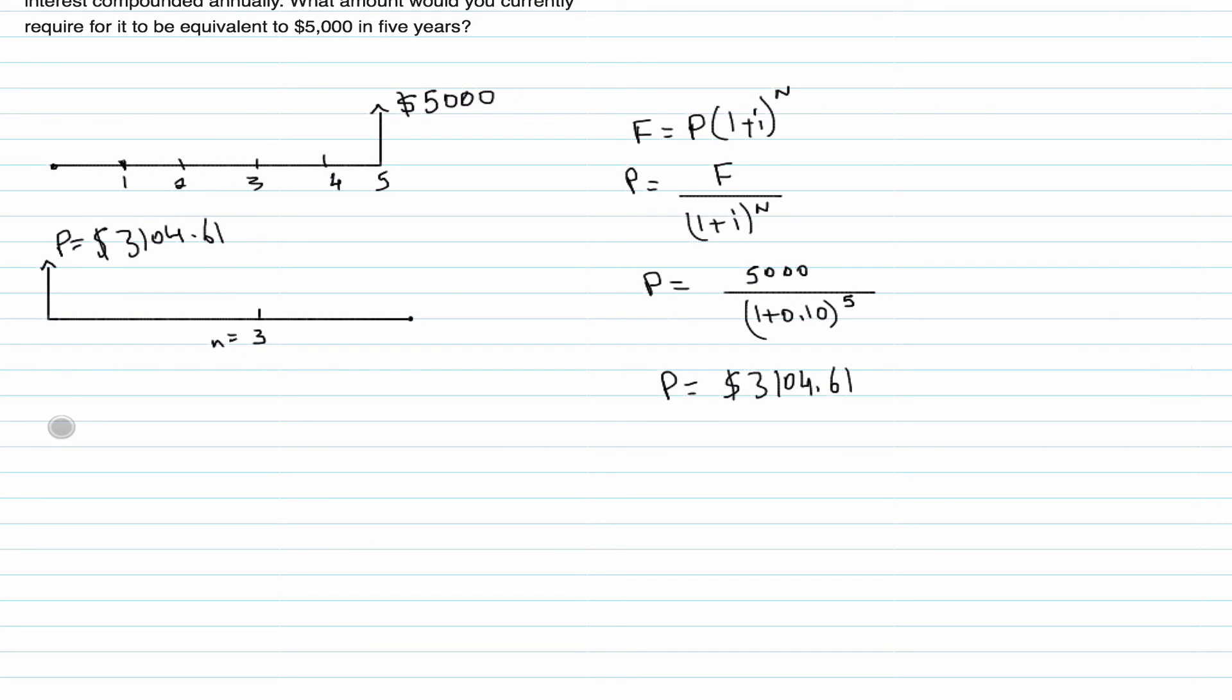So we will start with the future value formula, which is F is equal to P times 1 plus i to the power of n, where P is 3,104.61, 1 plus 0.10 to the power of 3, because we're trying to figure out what the future worth is for the third period, which is equal to 4,132.24. Now we're going to check if this value at the third period, so the third period equals to 4,132.24.